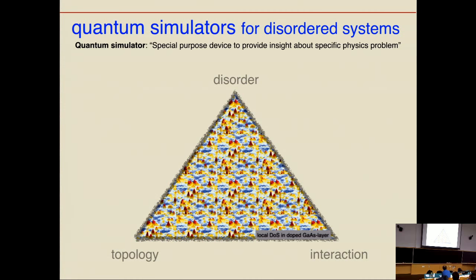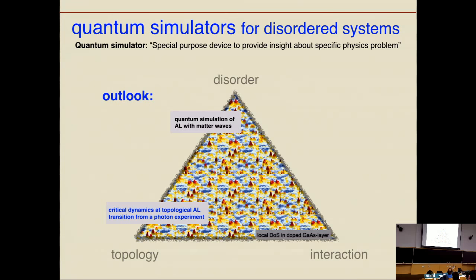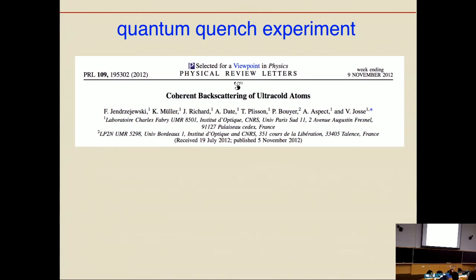The motivation for this talk is given by some very nice experiments which allow studying disorder in quantum systems in a very controlled way. We have already heard several interesting examples of quantum simulators, where mainly the focus was on the interacting side. Here I will talk about two examples which don't involve any interaction — single particle physics in a disordered system. I'll discuss work motivated by a cold atom quantum quench experiment studying Anderson localization, and then turn to recent work motivated by a photon experiment, where we hope one can study critical dynamics at a topology Anderson localization transition.